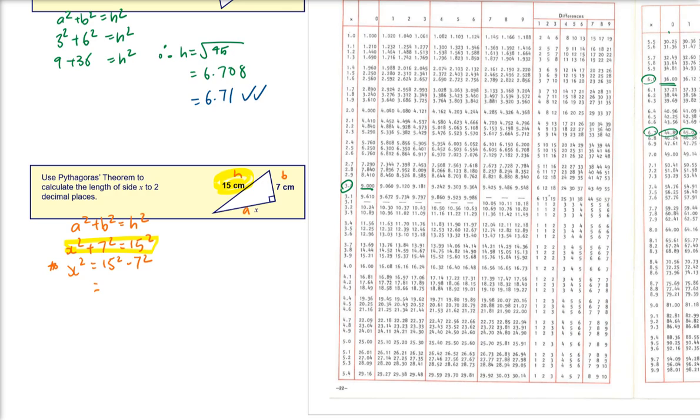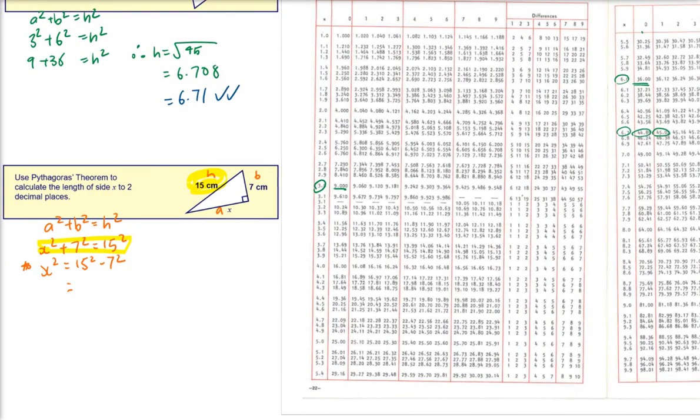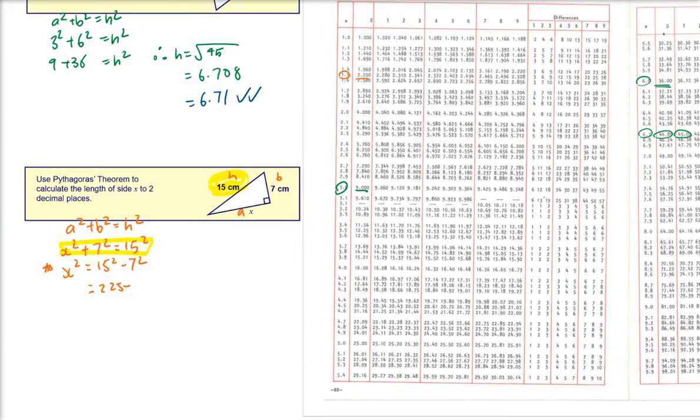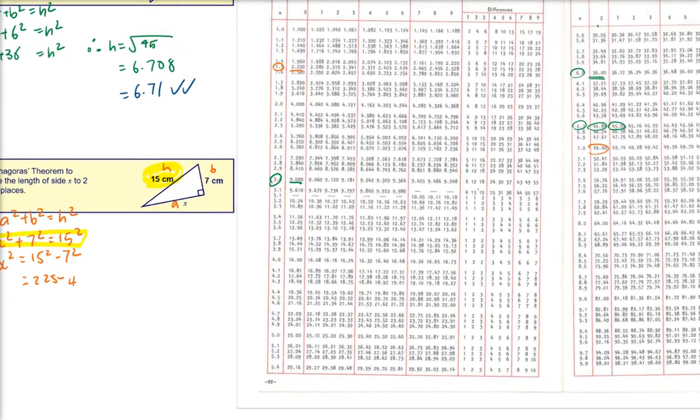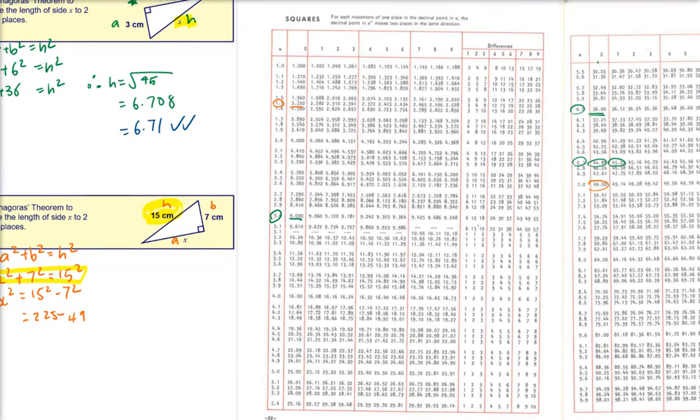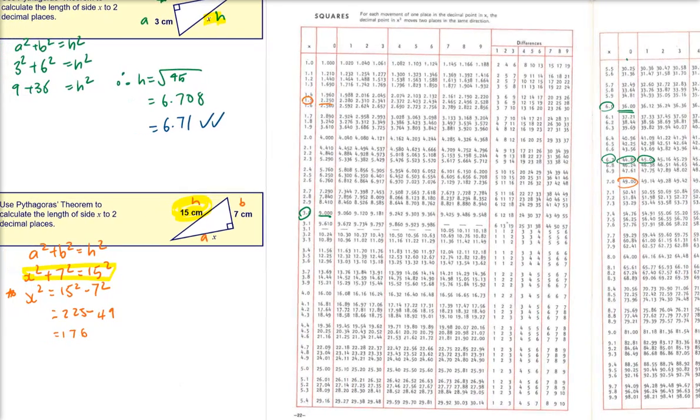I'll go 15 squared. Now these tables don't go up to 15 squared, so I can go 1.5 is 2.25, so 15 squared is going to be 225. 7 squared is 49, so 225 minus 49. 225 minus 50 is 175, so it's going to be 176.